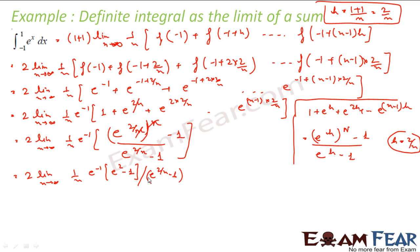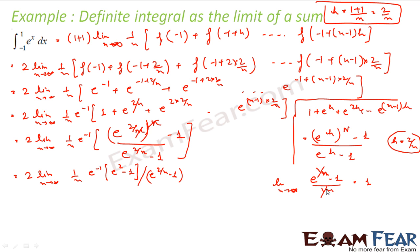Now I have to deal with e to the power 2 by n minus 1 in the denominator. I know the limit formula: limit x tends to 0 of e to the power x minus 1 by x equals 1. So instead of x, I use 2 by n, since when n tends to infinity, 2 by n tends to 0. This is the same formula. If e to the power x minus 1 by x tends to 1 as x tends to 0, then with 2 by n tending to 0, this becomes 1.